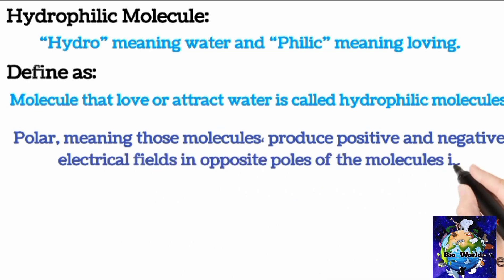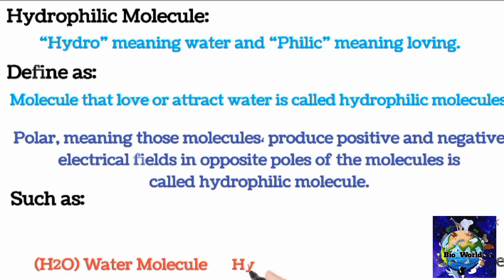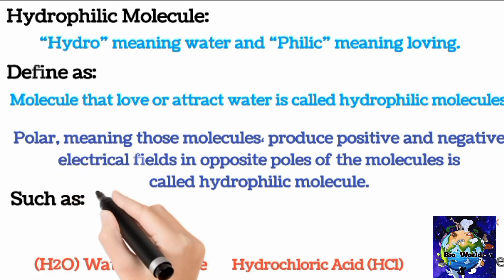In the molecule which produces positive and negative electrical field on the opposite poles of the molecules are called hydrophilic molecules, such as H2O water molecule and hydrochloric acid HCl.